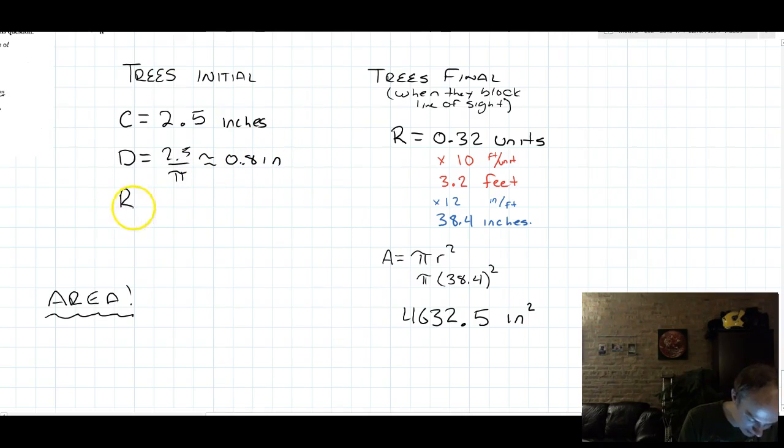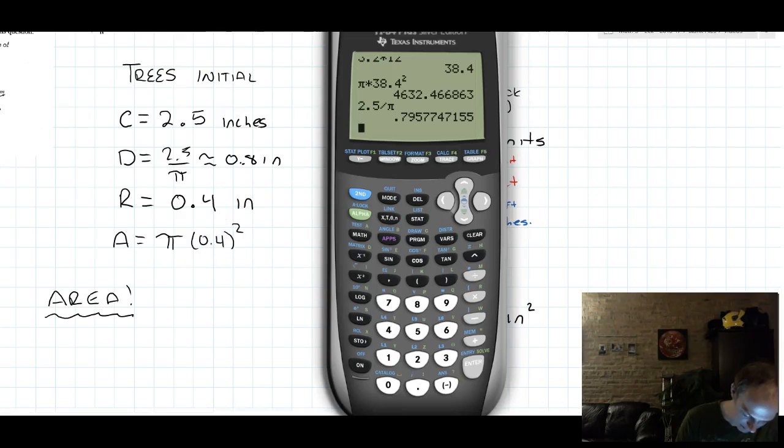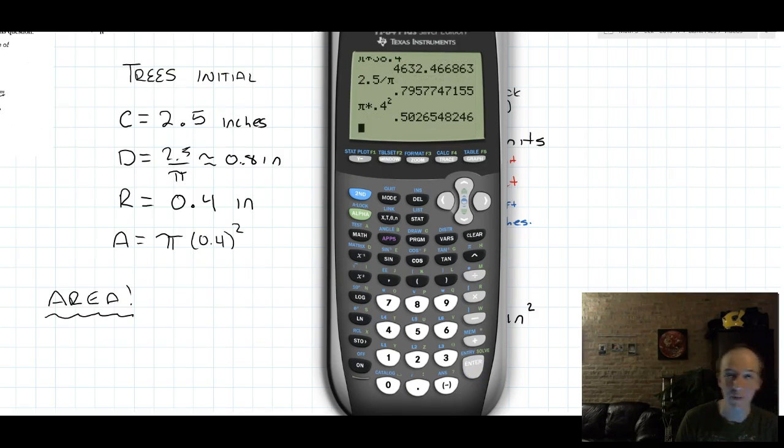Then you can find the radius, which is going to be half the diameter, 0.4 inches. And then you can find the area by doing pi times 0.4 squared, about 0.5.